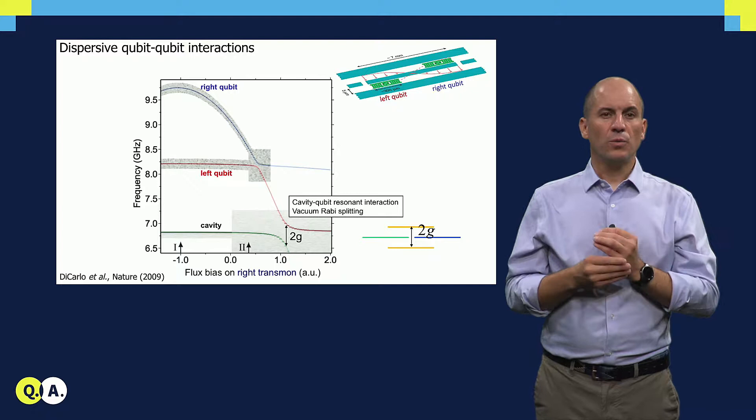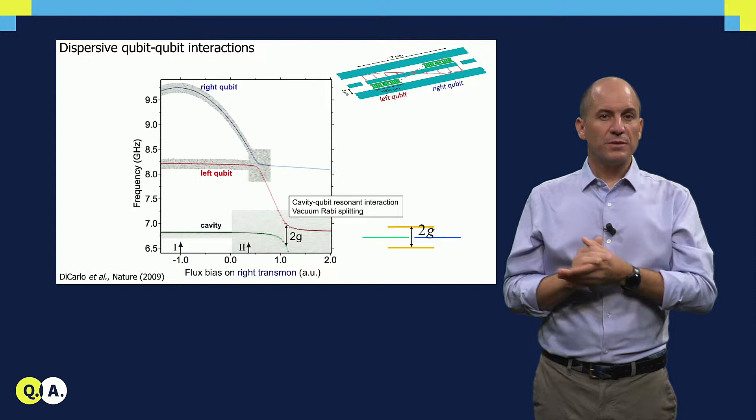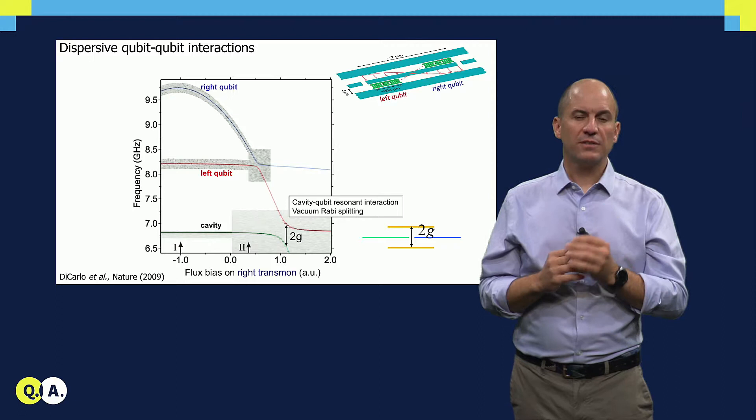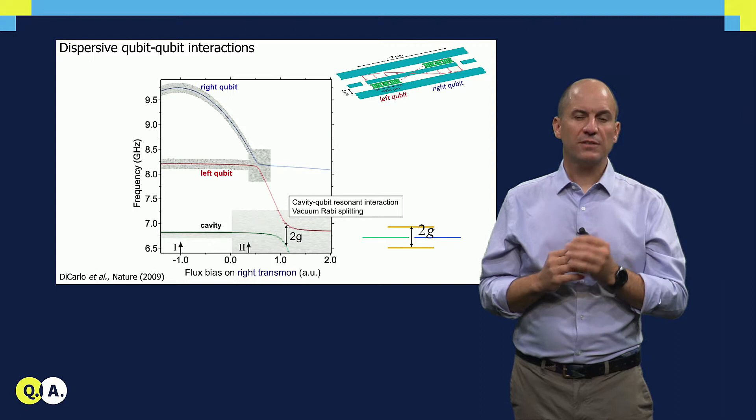When two qubits couple to a common resonator, an avoided crossing is also observed when one qubit is tuned through resonance with the other qubit. Compared to the vacuum Rabi splitting, which you can see here, the qubit-qubit avoided crossing is smaller, by a factor G over delta.